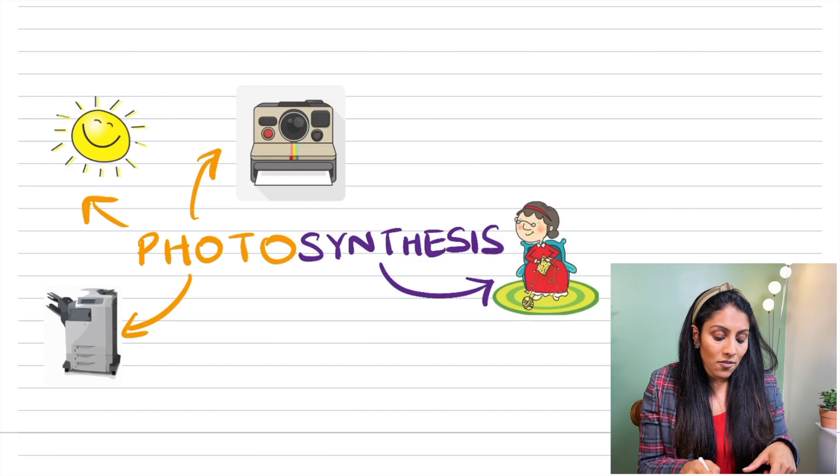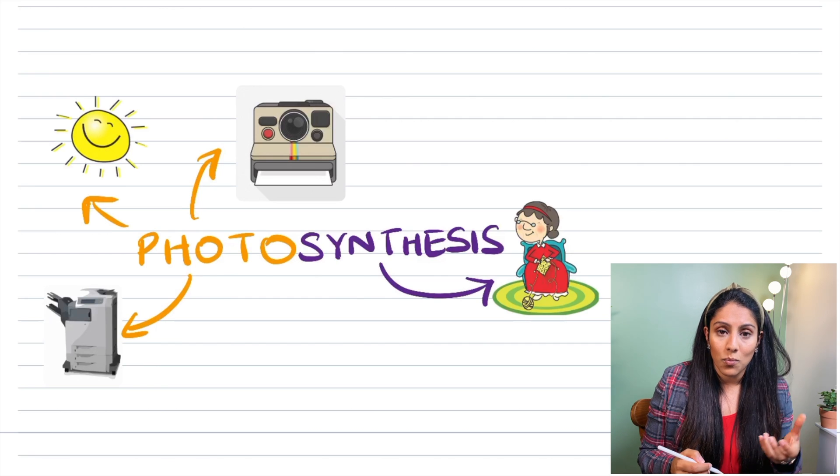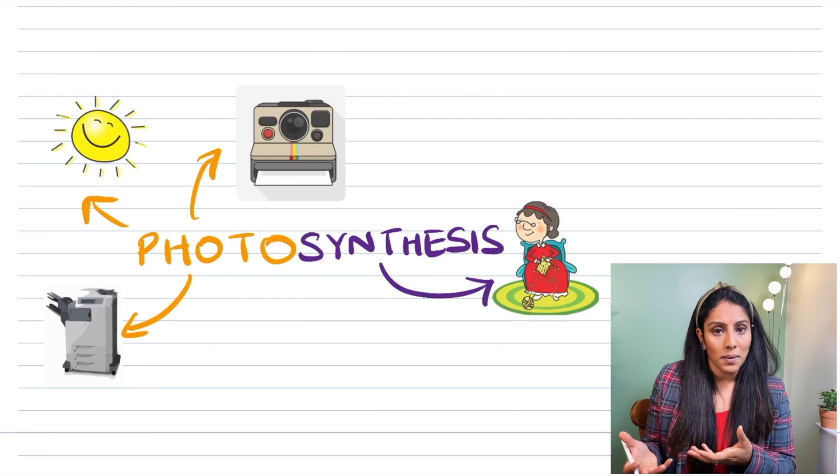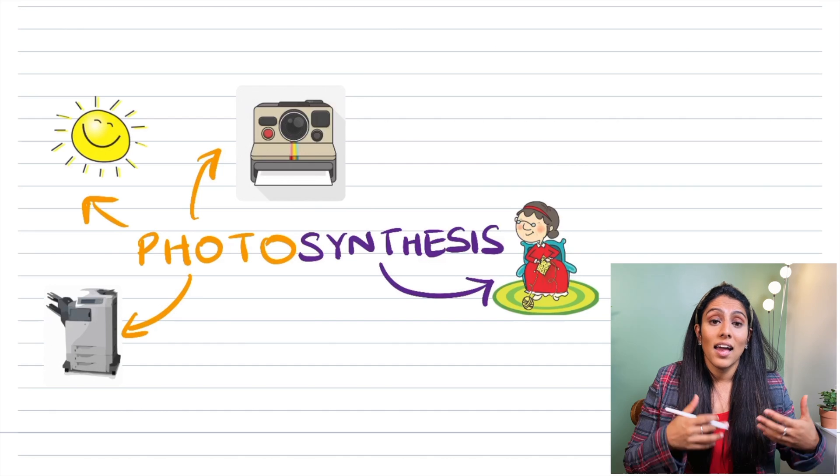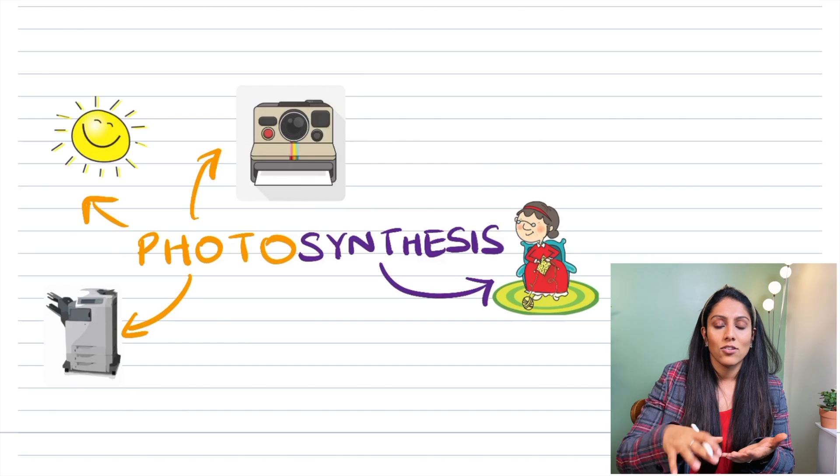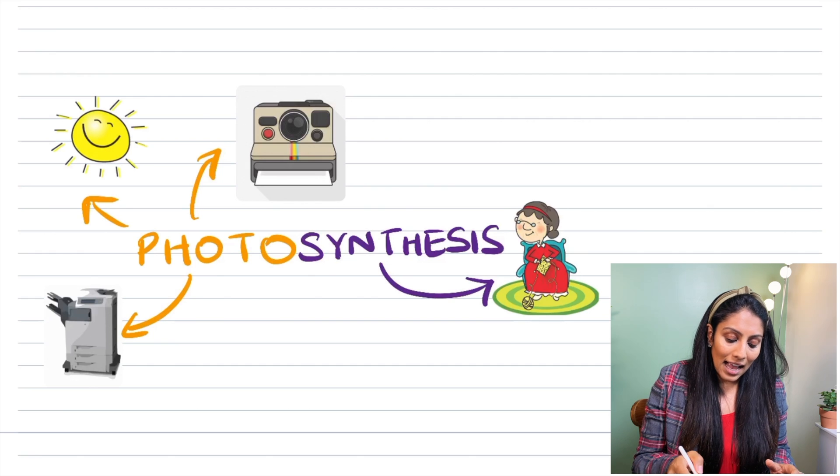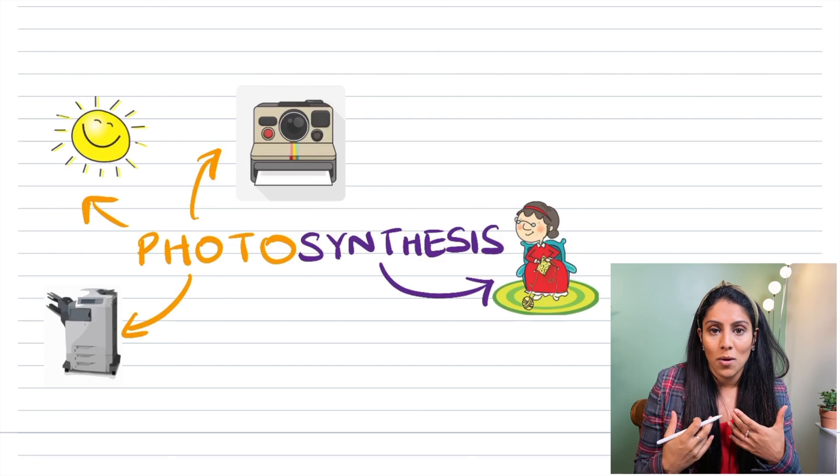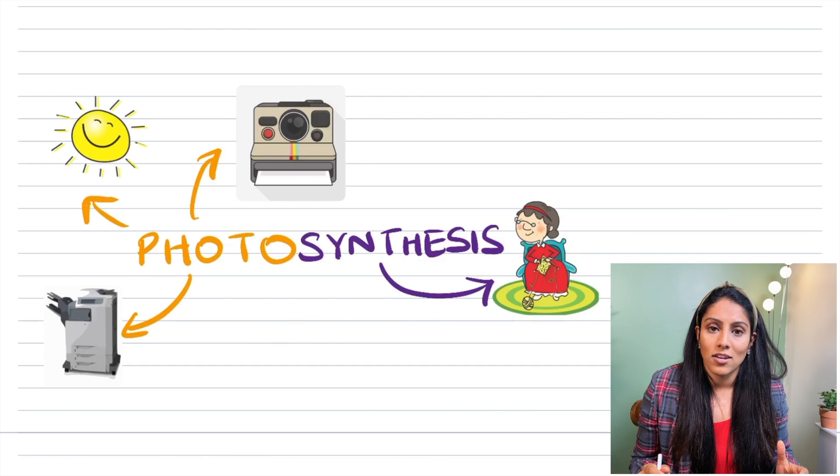So here you can see I've got other words that link to the word photo: photograph because it needs light to take a picture, photocopier again you need light to scan and duplicate a document, and synthesis you can see there my little grandmother who's making a jumper for me, she's synthesising a jumper for me.